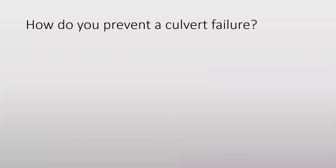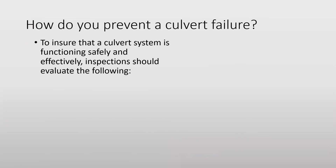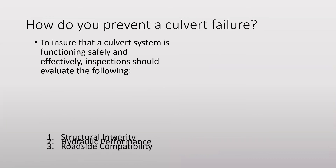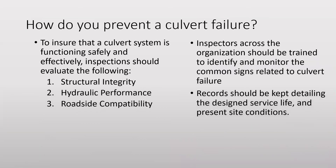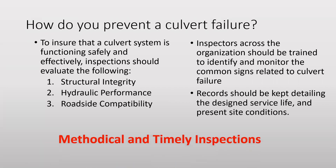So how do we prevent culvert failure? To ensure that a culvert system is functioning safely and effectively, inspections should evaluate the following: structural integrity of the culvert, the current hydraulic performance, and the roadside compatibility of the structure. Inspectors should be trained to identify and monitor the common signs related to culvert failure. Records should be kept detailing the design service life and present site conditions. The surefire way to monitor a culvert's condition and prevent failure is through methodical and timely inspections.